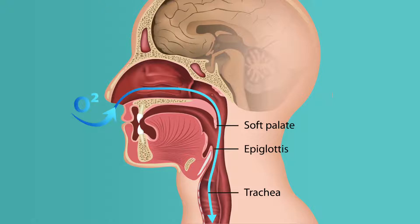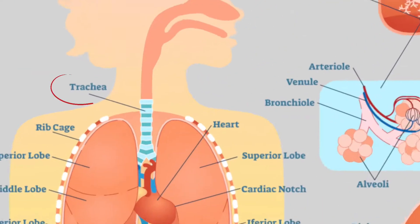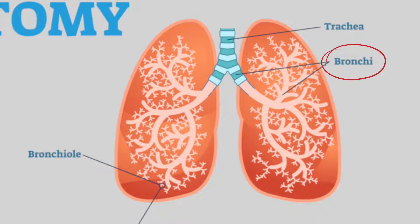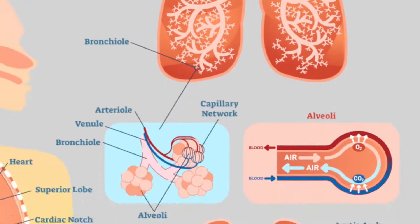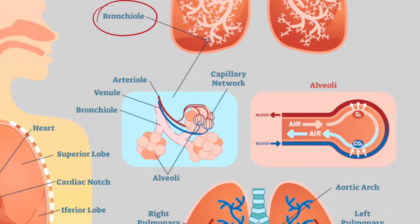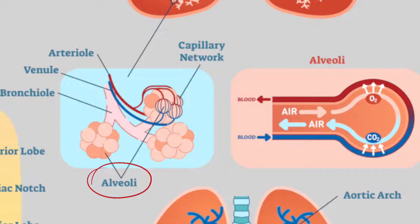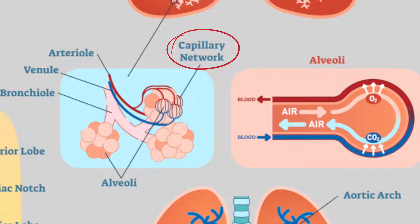Air moves from the nose or mouth down the trachea, or the windpipe, toward the lungs. The trachea splits into two smaller tubes called bronchi that move into the right and left lungs. Within each lung, each bronchi branches out into even smaller bronchioles. Finally, each small bronchiole ends in a small sac called an alveolus — the plural of which is alveoli. The alveoli are all surrounded by capillaries, or small blood vessels, which carry the oxygen from the lungs to the rest of the body and return the cells' carbon dioxide waste to the lungs.